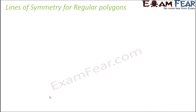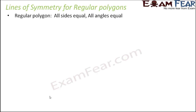Now let us talk about a special case — regular polygons. Regular polygons are those polygons which have equal sides and equal angles. Polygons — poly means many — so those closed figures which have many sides, made up of line segments. They are closed figures where all the sides are equal in length and all the angles are equal. Such a polygon is called a regular polygon.